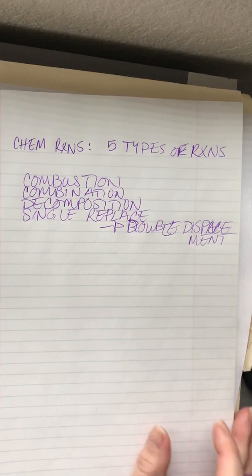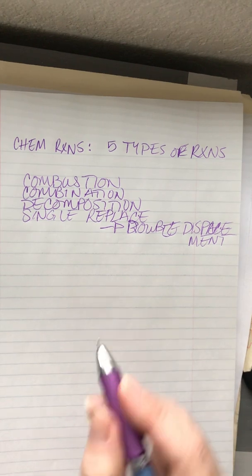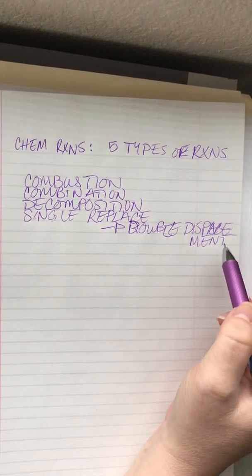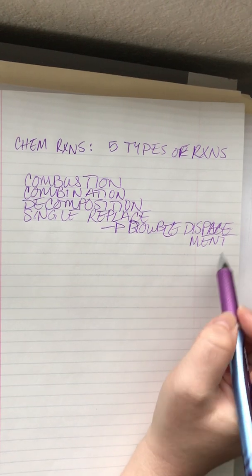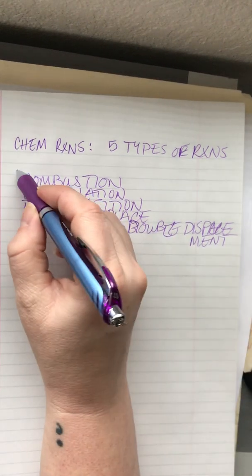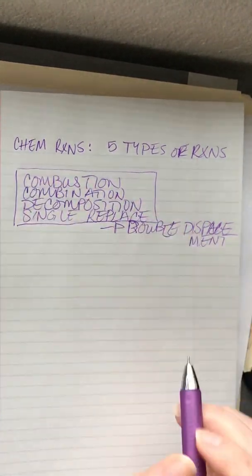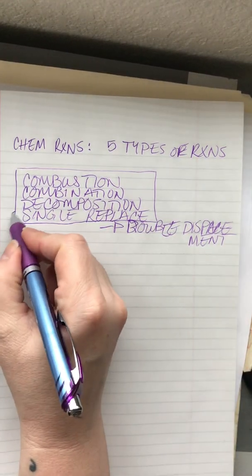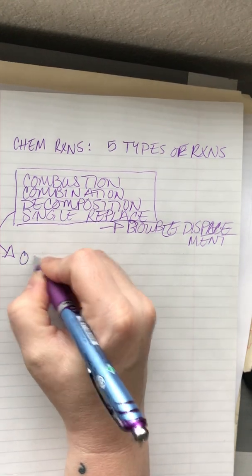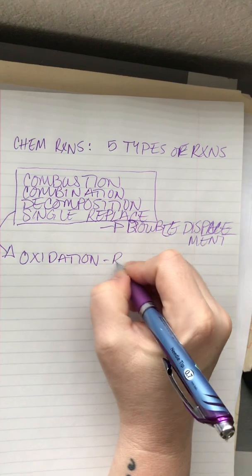These are our five types of reactions, and hopefully you guys are working with those so you're a little familiarized with them. We talked about the double displacement last because it's a kind of chemical reaction that we're going to come back to when we talk about solutions. But for now, we are going to focus on these guys — these top four are all different types of oxidation reduction reactions.